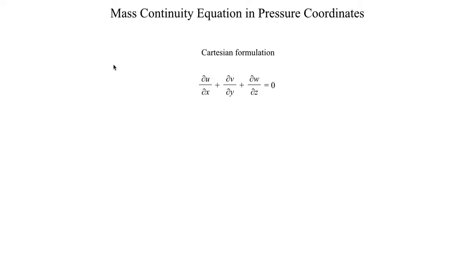Hello class, welcome to the next segment in lecture 27. In this segment we're going to take a look at the mass continuity equation that we derived in lecture 8, and see how that changes when we go from a centered Cartesian grid to pressure coordinates. So with that, let's dive right in.